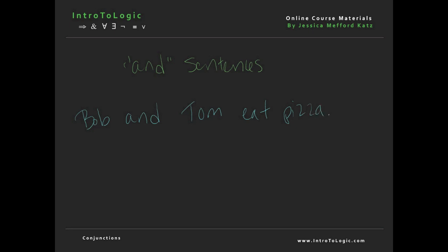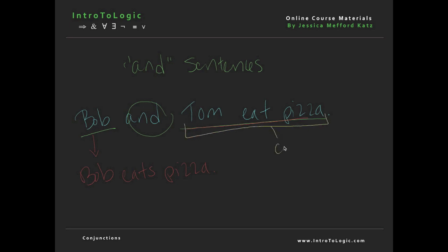This is a conjunction because it is technically two sentences conjoined with the word 'and'. So for our first sentence, we have the sentence Bob eats pizza. And for our second sentence, we have the sentence Tom eats pizza. Notice that each of these sentences is called a conjunct.